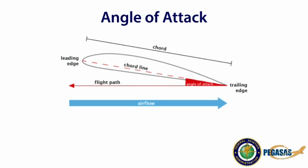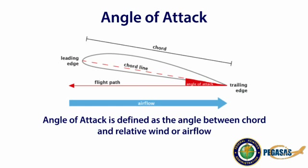Angle of attack is defined by two references. One is the chord line, which is an imaginary line drawn from the leading edge to the trailing edge of an airfoil. The other reference is the relative wind, shown in this picture by the arrow marked Airflow. Relative wind is equal and opposite to the flight path of the aircraft. The angle of attack is the angle between the chord line and the relative wind.